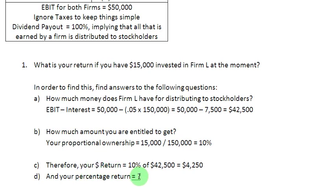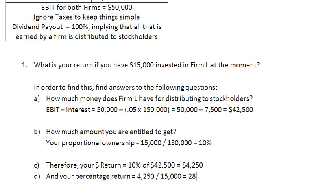To find the percentage return, we simply divide the amount of money you make — $4,250 — by the amount you invested, $15,000. That gives you a percentage return of 28.33%.